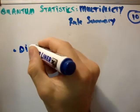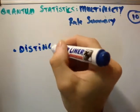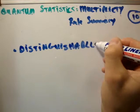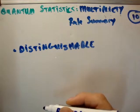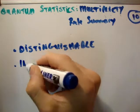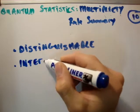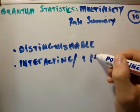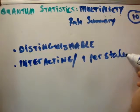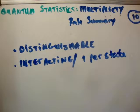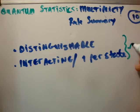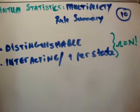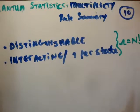So where they are distinguishable and where they are interacting, or 1 per state, then the multiplicity is equal to n factorial. Alright, n factorial.